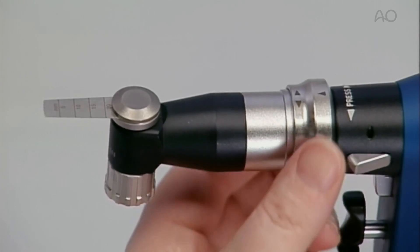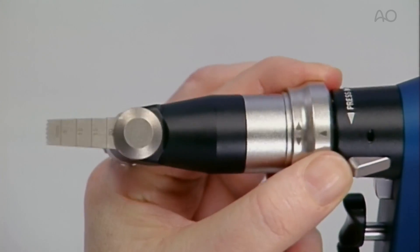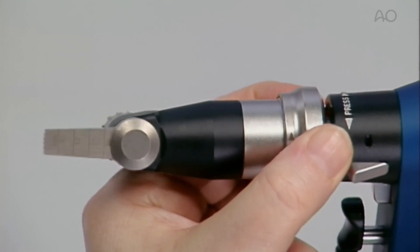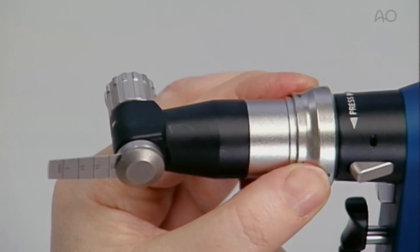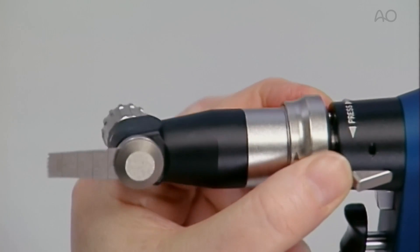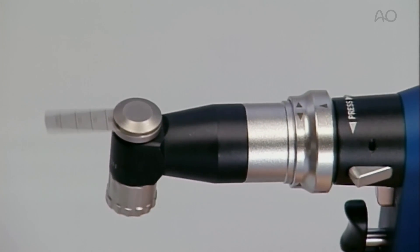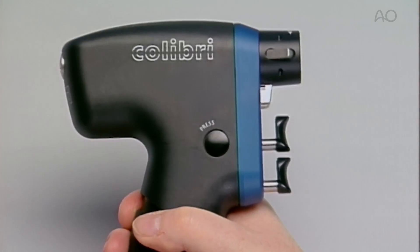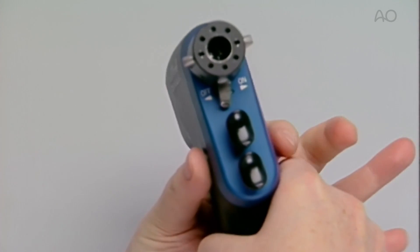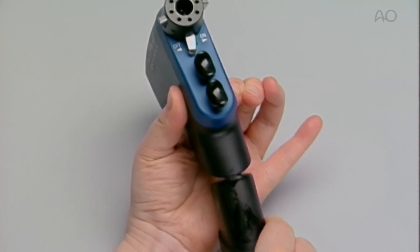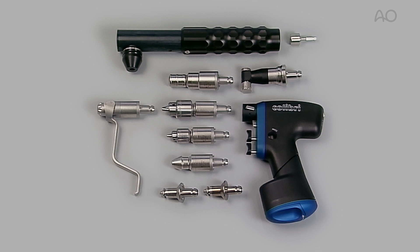The saw attachment can be rotated in 45 degree increments for appropriate use. By depressing the buttons on both sides of the drive, the battery can be removed. There is a complete range of attachments for the Calibri.